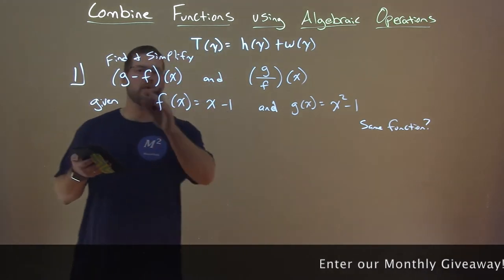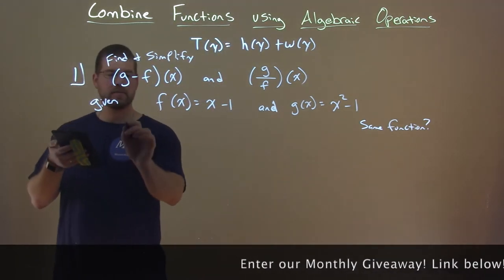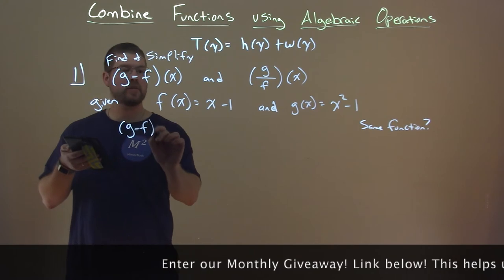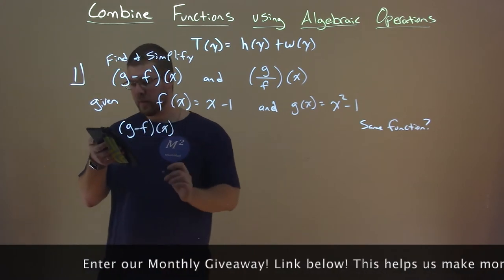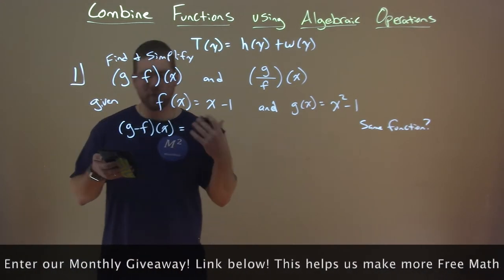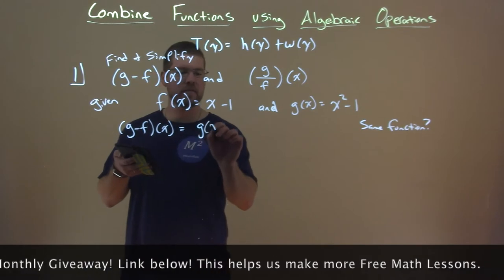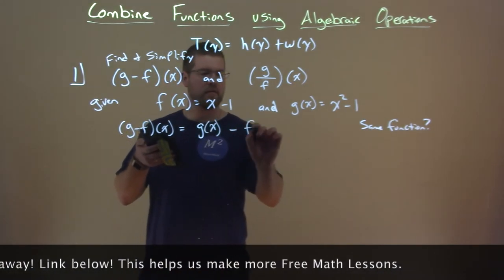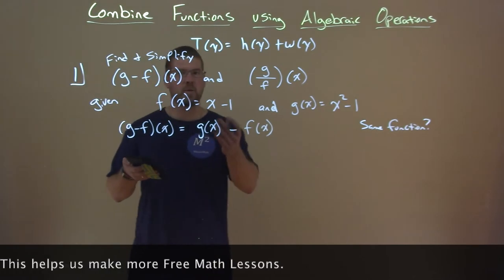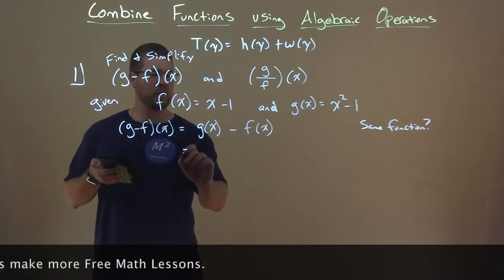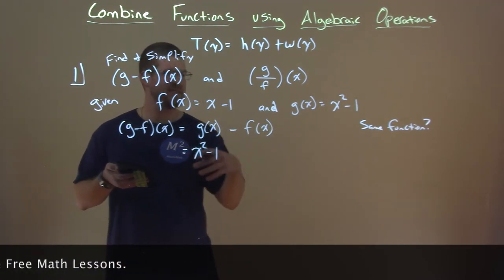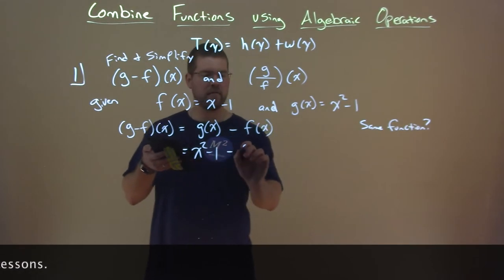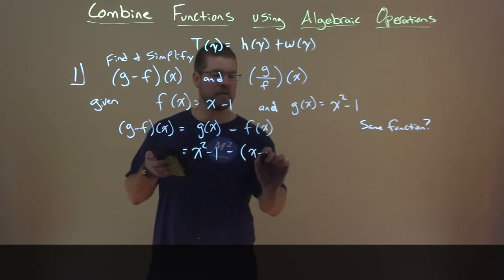Okay, so let's start with the first one they're asking: g minus f of x. So g minus f of x here. What does that equal? Well, we've learned before that is g of x minus f of x. Okay, so what is g of x? Well, that's x squared minus one. This is substituting that in. And then f of x is just x minus one.